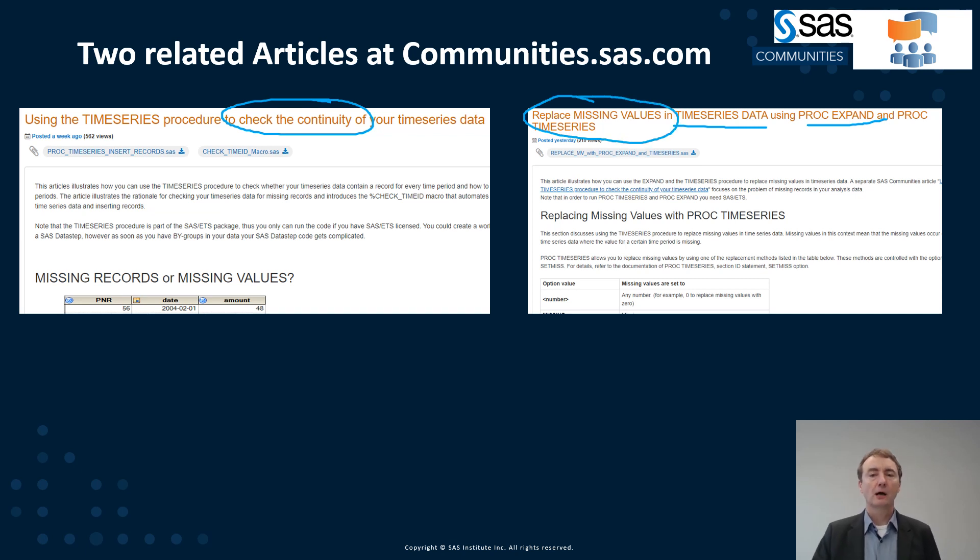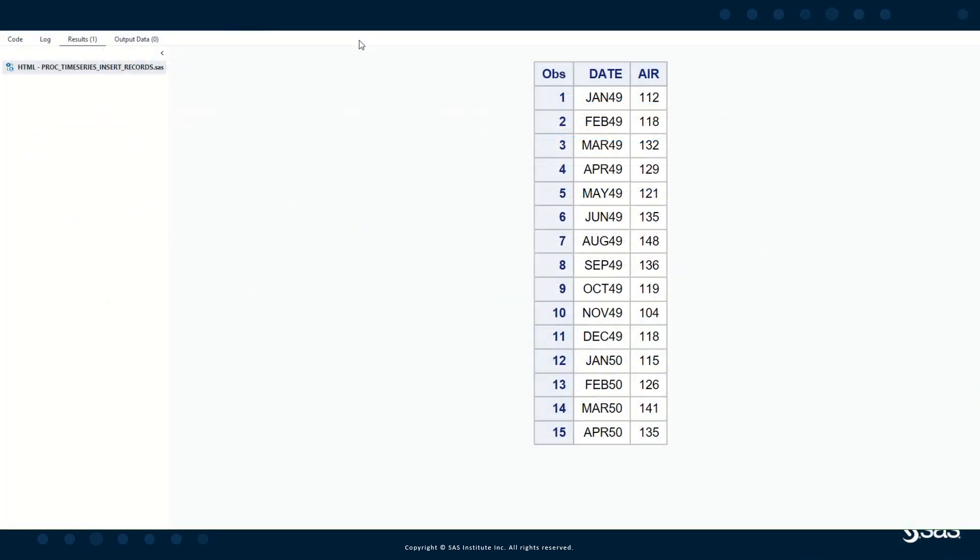Let's have a quick look at how this could look like in SAS code. Let's take a look at some example data. You see here some records from the SAS HELP AIR dataset. And I have deleted some records out of that dataset. For example, here between records six and seven, you see there's no record for July 49 available.